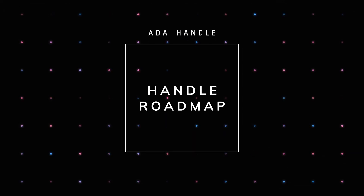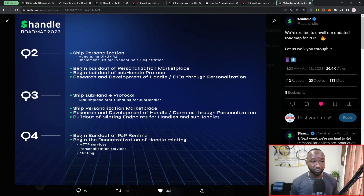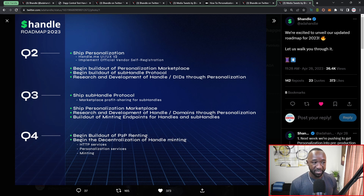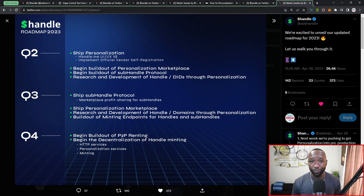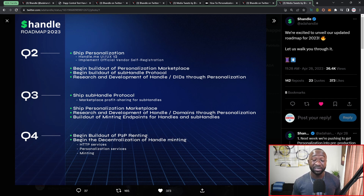Their 2023 roadmap shows they were aiming to release the personalization feature in Q2 2023 — it took a little time but is now live at handle.me. Next they will pivot into the sub handle protocol, and once that is done they'll begin developing ADA handle domains through personalization. Goose and I also touched on P2P renting, which I'm extremely excited about — imagine renting out an NFT and earning passive income. Platforms like Lending Pond and Fluid Tokens have also begun discussing NFT renting, so a collaboration around renting and additional utility for ADA handle holders could be interesting.